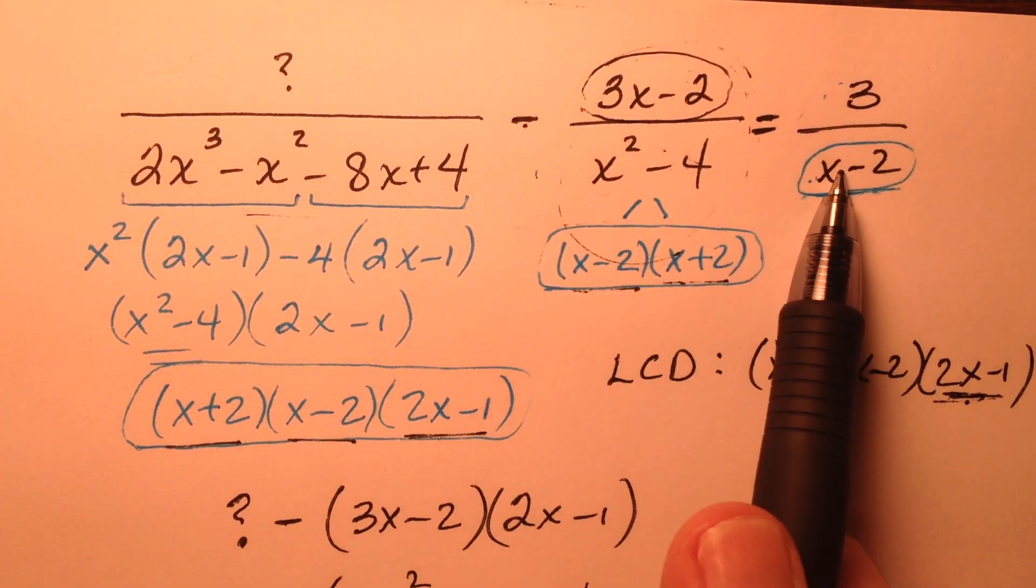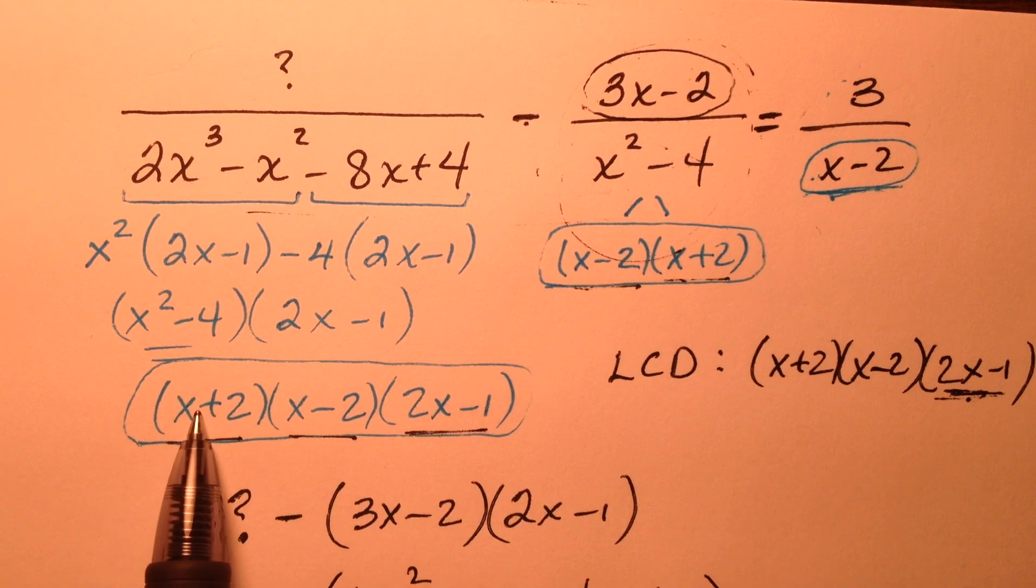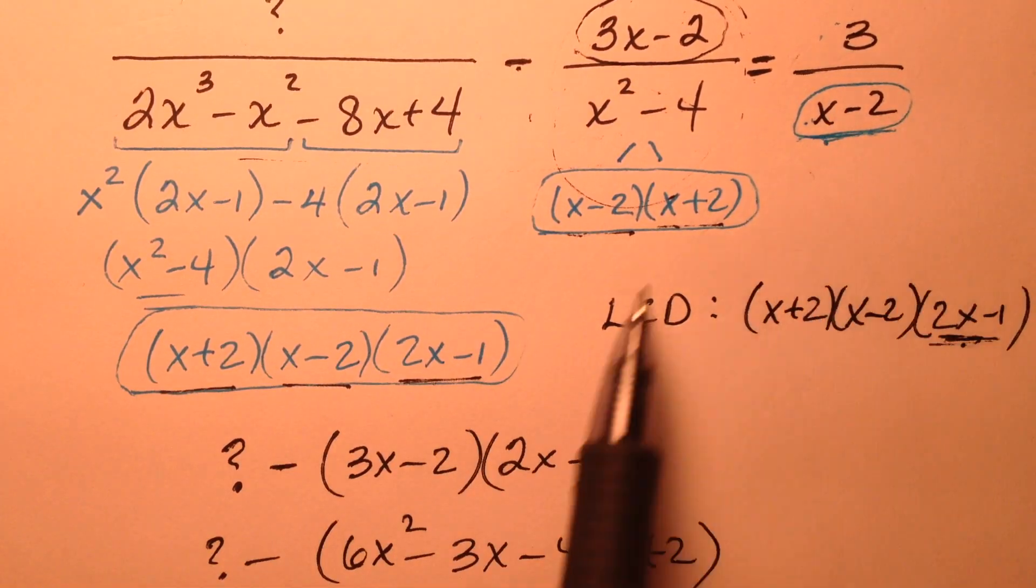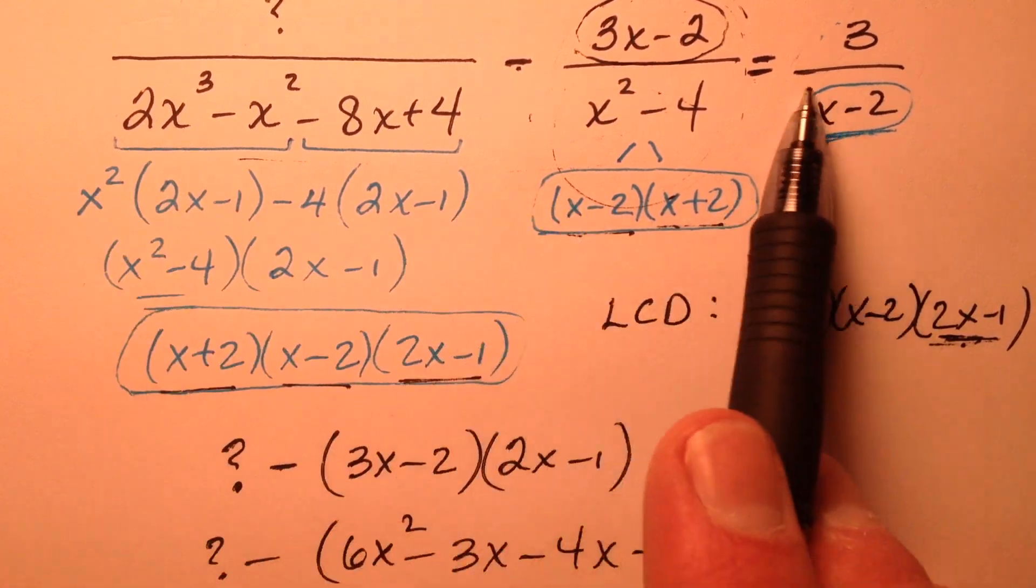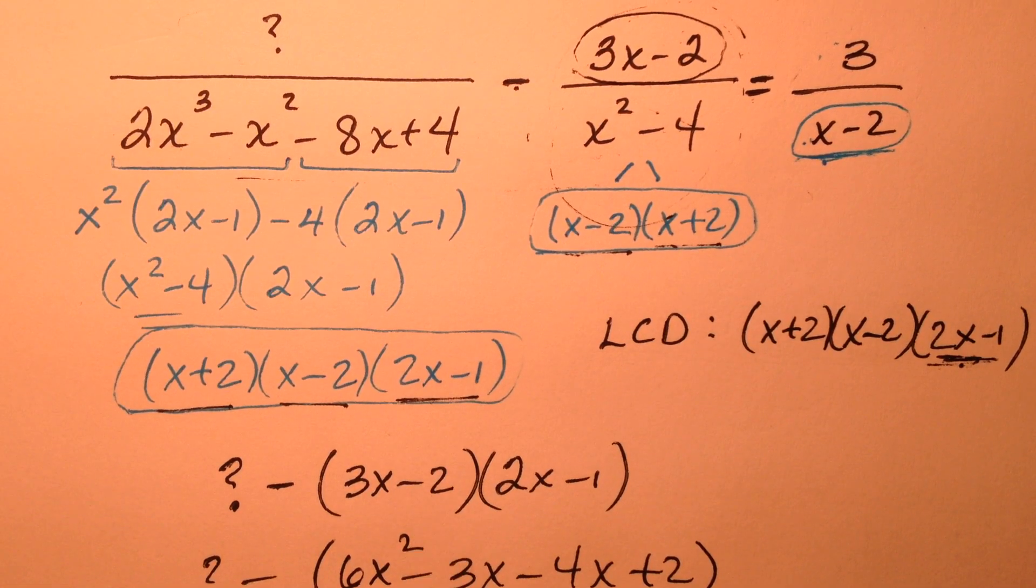Obviously, all of these denominators are different. So what I need to do first is to factor all the denominators and figure out what the common denominator is and just give every single rational expression that common denominator.